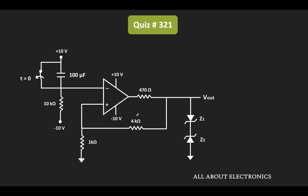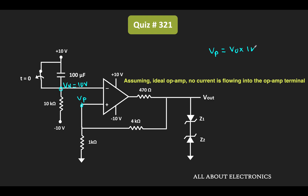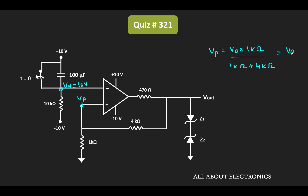First, let us see the state of this circuit at time t equal to 0-. At t equal to 0-, this switch is in the closed condition. That means the voltage at the inverting terminal of the op-amp, which we call Vn, will be equal to 10V. The voltage at the non-inverting terminal, Vp, can be given as Vout times 1kΩ divided by (1kΩ plus 4kΩ), or Vout divided by 5.